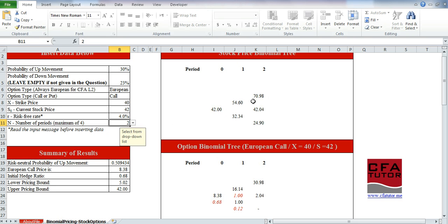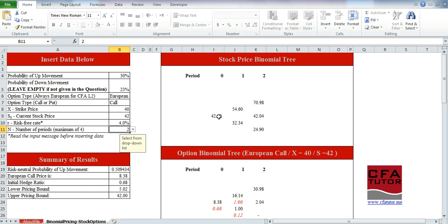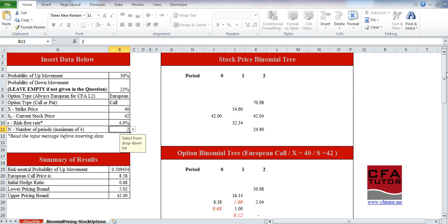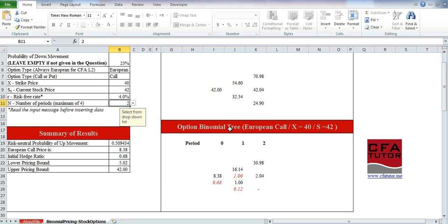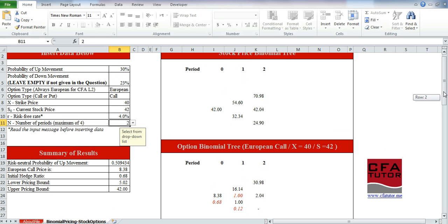This shows over here the stock price path over time, so how stock price develops over the next period and the period after. And this one shows you the option binomial tree, which shows you a European call with a strike price of $40 and a stock price of $42. The numbers over here show you the option price at each point of time, the option value at each point of time.